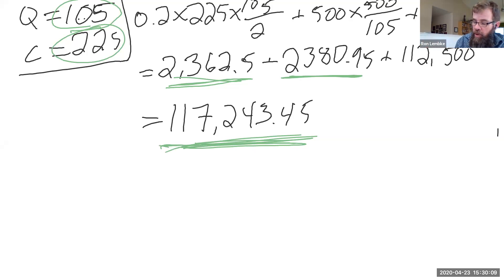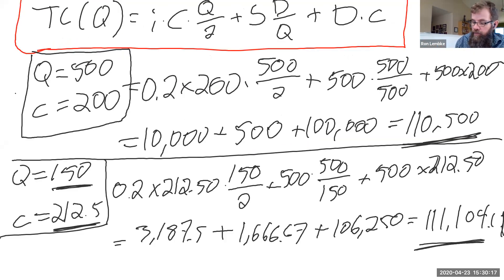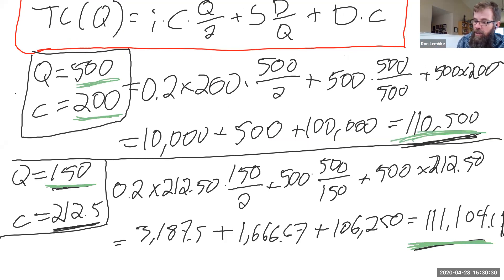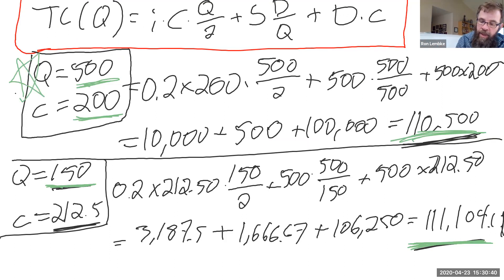So comparing all three: buying 105 at $225 costs $117,000; buying 150 at $212.50 costs $111,000; buying 500 at $200 costs $110,500. The answer is that we should buy 500 units at a time and pay $200 per unit, for a total annual cost of $110,500.